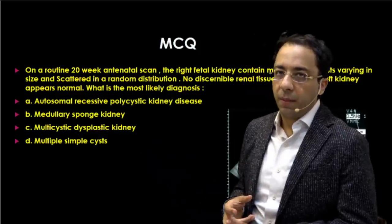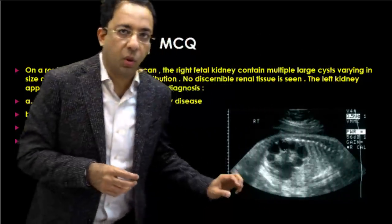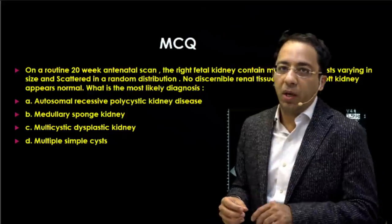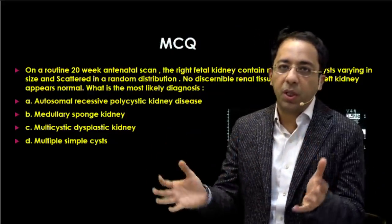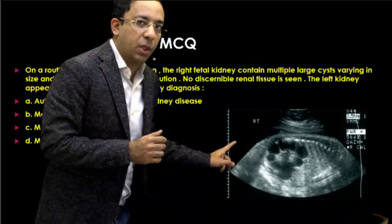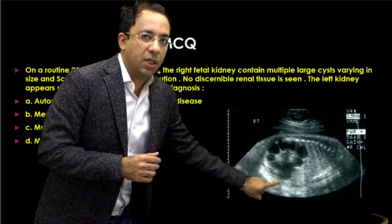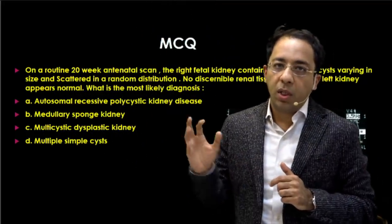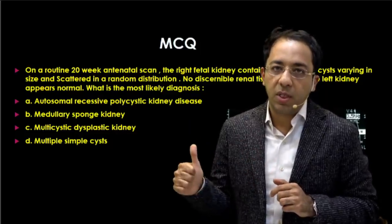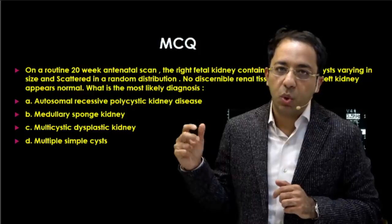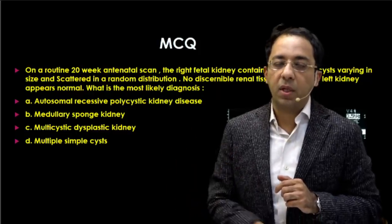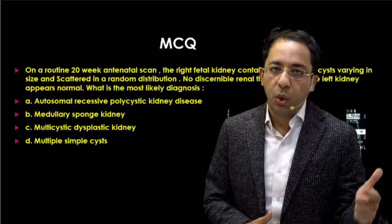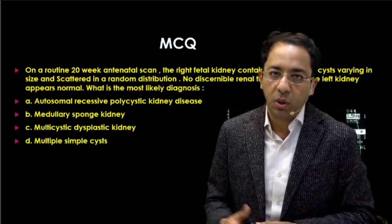Here is the antenatal ultrasound image of this patient showing multiple cysts. You can see the fetal spine and the multiple cysts in the kidney. The key diagnostic features are: number one, it is an antenatal diagnosis; number two, there is unilateral involvement; number three, there is no renal tissue. These are the hallmarks pointing to multicystic dysplastic kidney — developmental and usually unilateral.